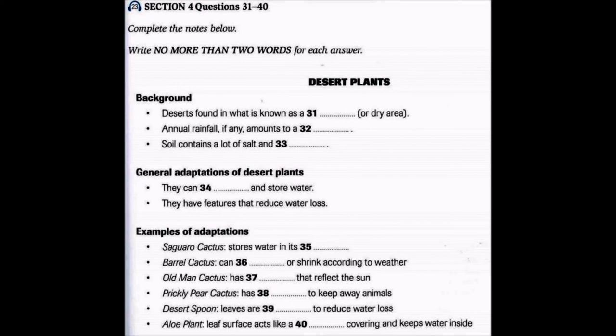Our next plant is called the desert spoon. This plant has long leaves that fan out and they're very succulent because they can store water inside. However, they're also usually very tough, which helps keep the water inside and also makes them less tasty to animals.